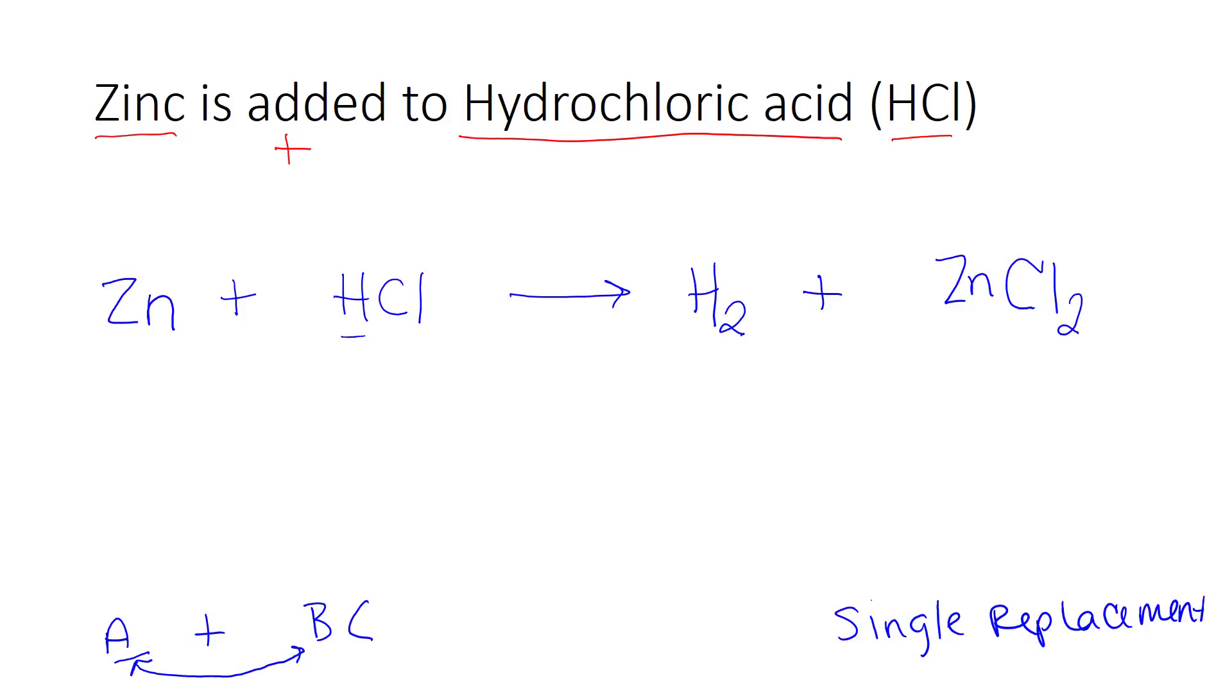So now I'm ready to balance. I'm going to count up zinc. I have one zinc here, one zinc here. Perfect, we're balanced. Here I have one hydrogen, and on the product side I have two hydrogens. I'm going to go back to the smaller side and think what times one will give me two, and the answer is two. So now I have two hydrogens. This two, remember, applies to not only hydrogen but also to chlorine. So I actually have two chlorines here as well. Going back to my product side, I notice my subscript is two and my coefficient is one, so one times two is two. I have two chlorines here as well. So all I needed to balance this equation was to put a 2 in front of the HCl, and now we're balanced.